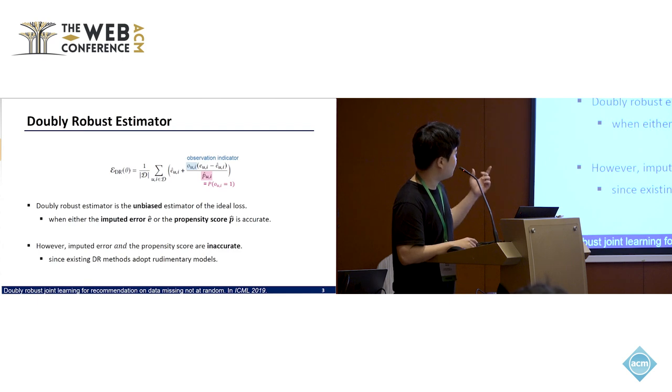However, the imputed error e and the propensity score p are inaccurate because existing DR methods adapt rudimentary models to estimate these values.